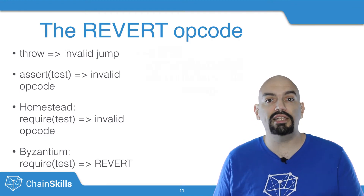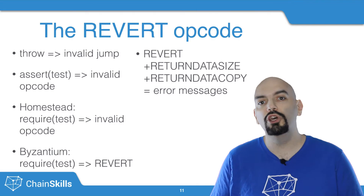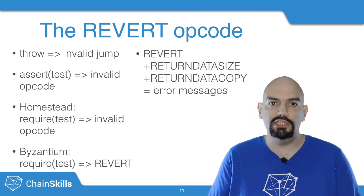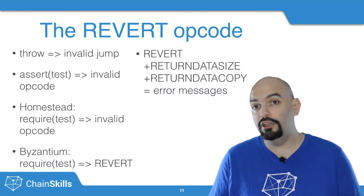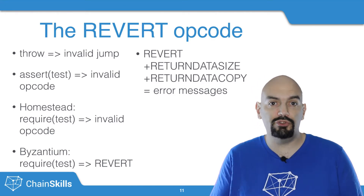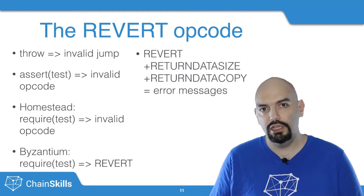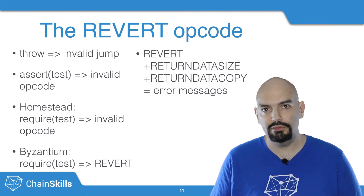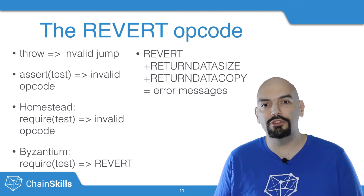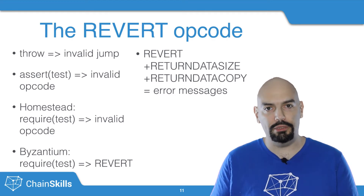And that is exactly what the new Return Data Size and Return Data Copy opcodes will be useful for. Solidity doesn't support those yet, but in the near future you can expect the require function to accept extra parameters in addition to the condition to be checked, in order to return some error details. A programming language where exceptions can cost actual money that finally supports proper exception messages — how exciting is that?